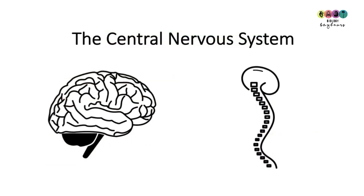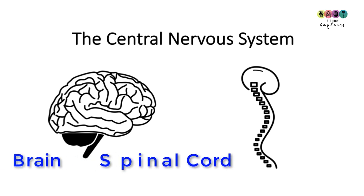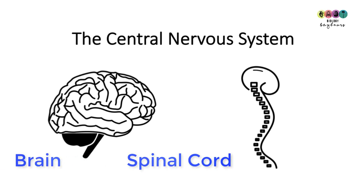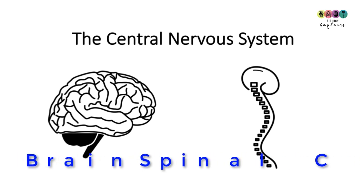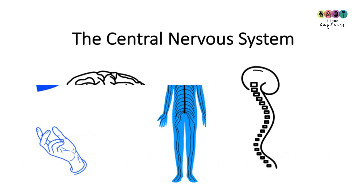Your central nervous system is made up of the brain and the spinal cord — just those two parts. Your spinal cord goes the whole way down your back and it's protected by those bones, the vertebrae.